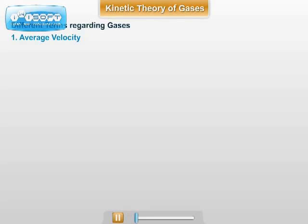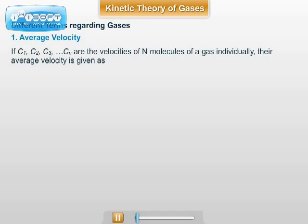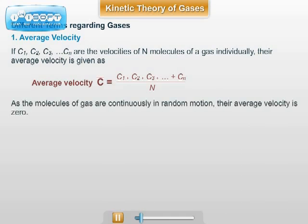Different molecules move with different velocities. If C1, C2, C3 dot dot dot Cn are the velocities of N molecules of the gas individually, their average velocity is given as C̄ equals C1 plus C2 plus C3 plus dot dot dot plus Cn upon N. As the molecules of the gas are continuously in random motion, this average velocity is zero.